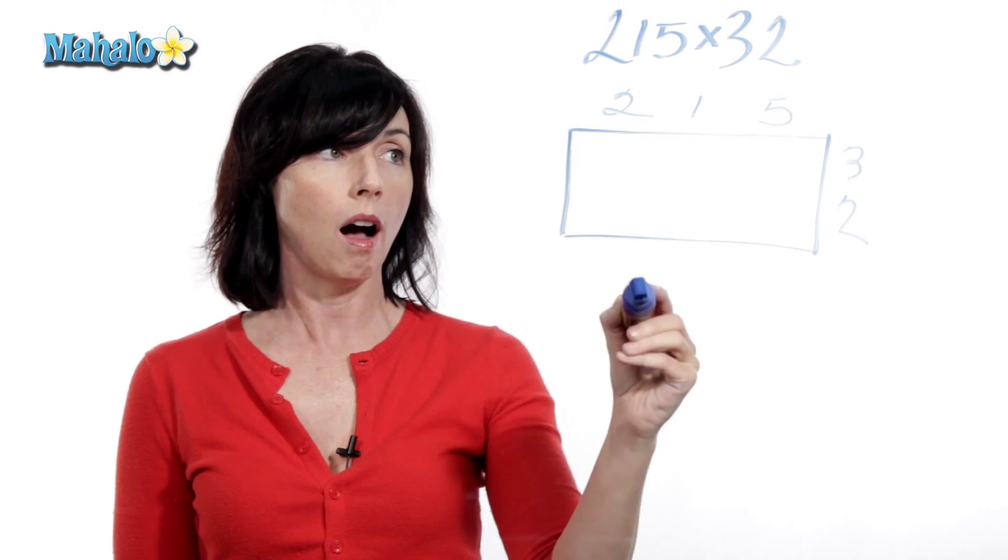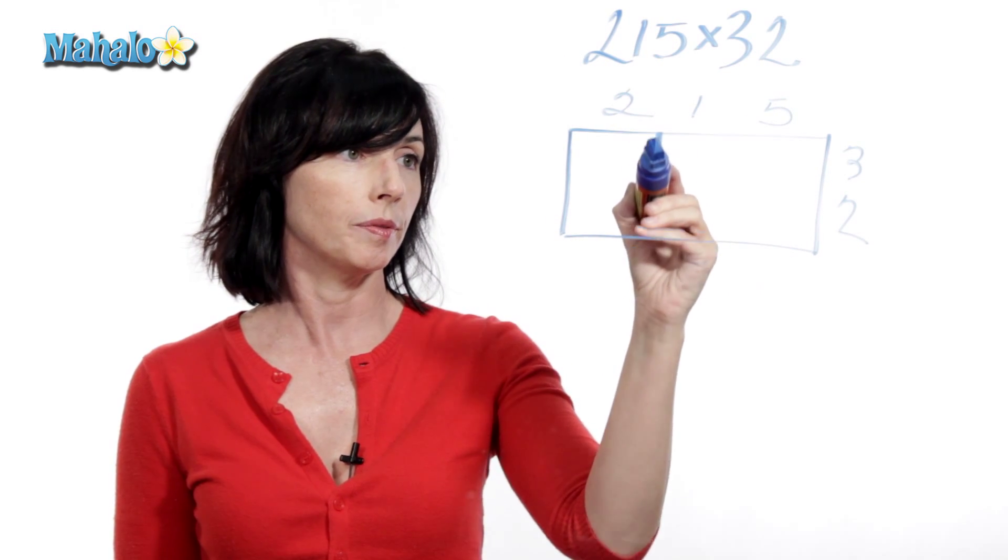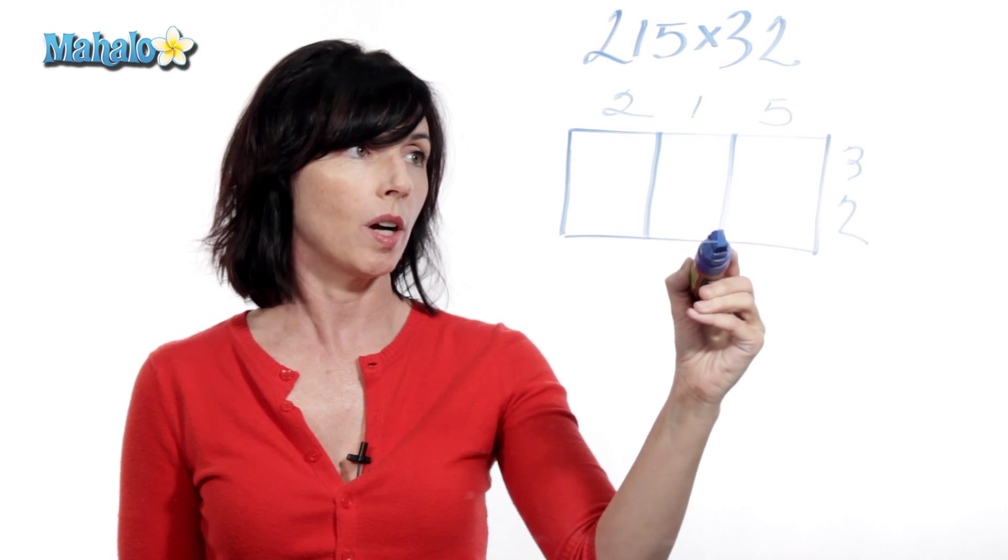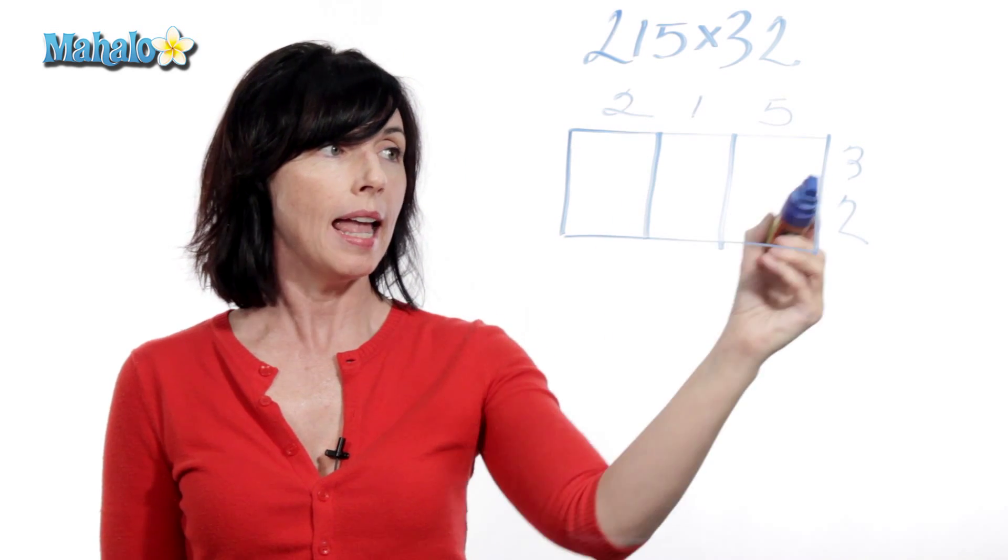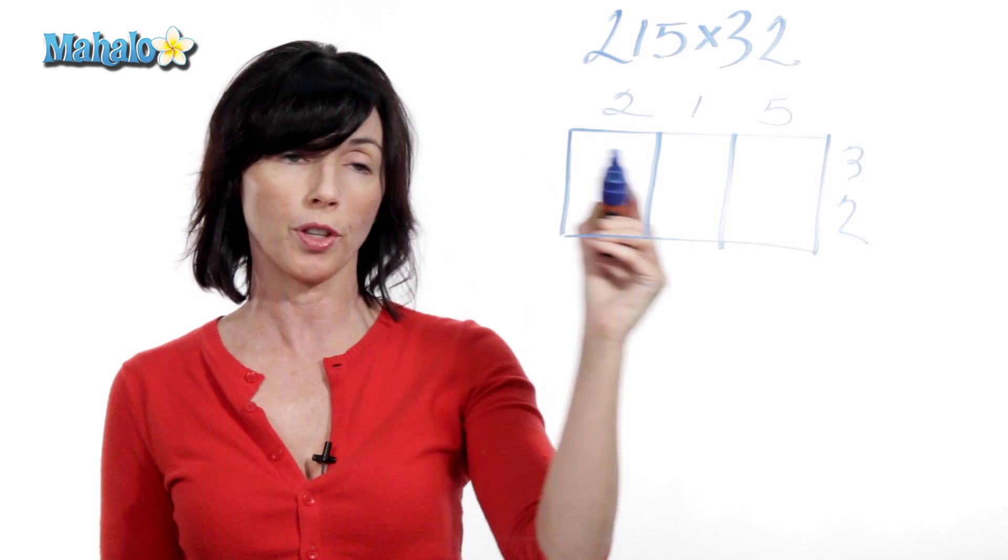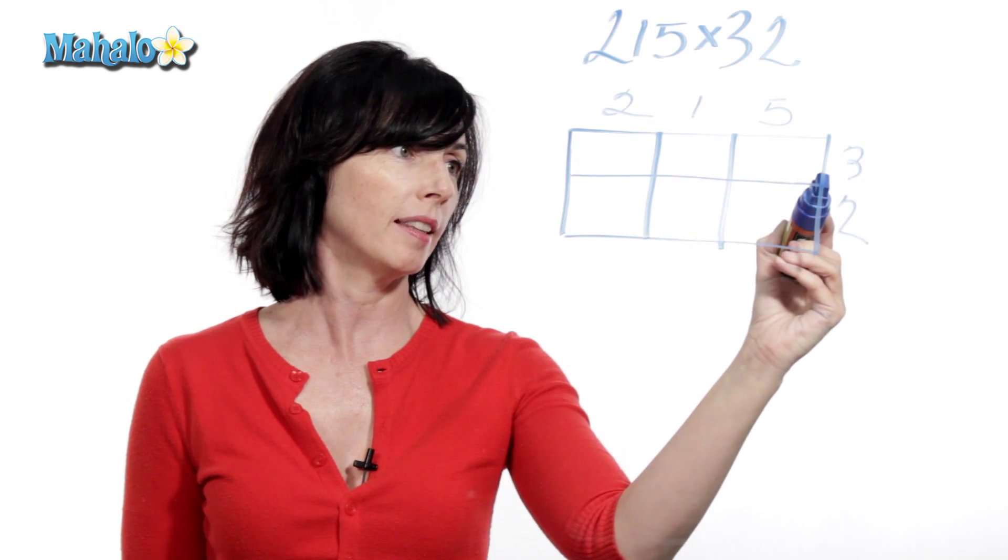Now, I need one column for each of the digits I have up here. So I've got now a column here, here, and here. And same thing here, I need a row for the 3 and a row for the 2. So I'll draw a line there.